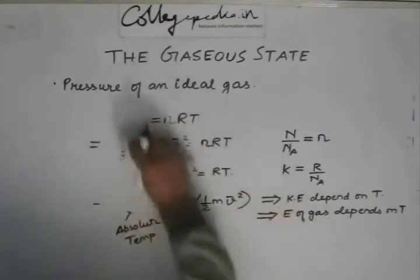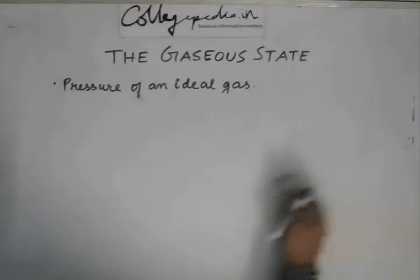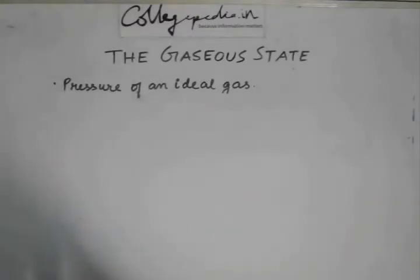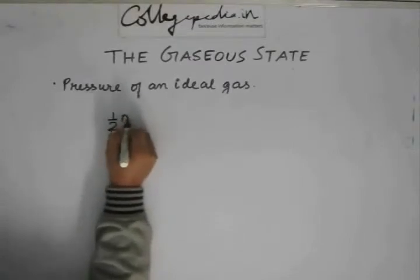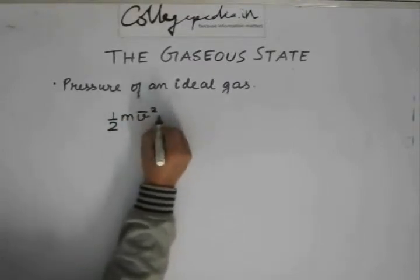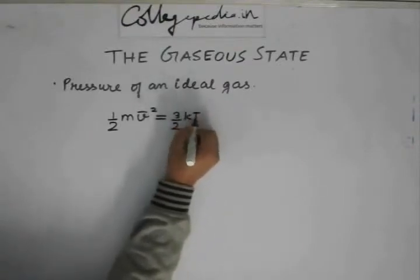If we look at the expression of kinetic energy in terms of temperature and some known constants, we get that half mV square is going to be equal to 3 by 2 KT.